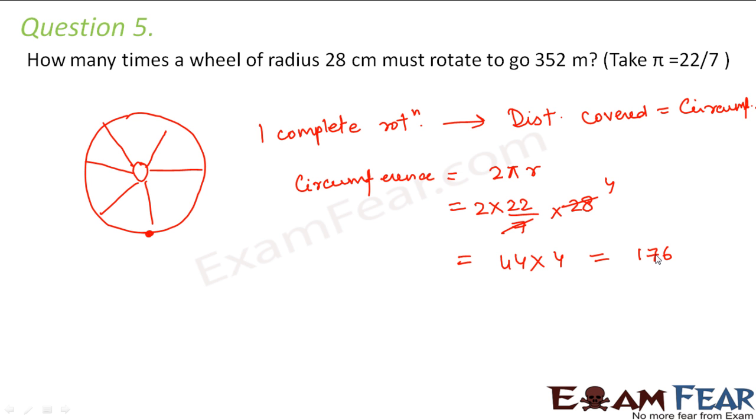So this is 176 centimeters. Now here the distance is given in meters, so let us convert this also in meters. 176 divided by 100 meters equals 1.76 meters. So this is the circumference of the wheel.